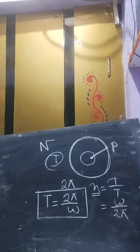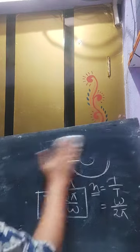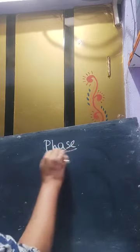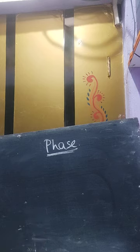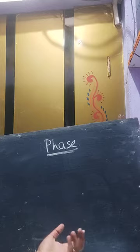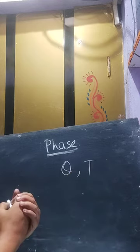Now, one new definition: phase. When a particle oscillates, its position and direction of motion vary with time. Phase is the position and direction of a particle at any given instant. The phase is expressed either in terms of angle theta or in terms of periodic time T.